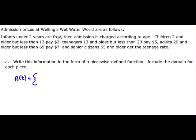But then the next one says children two and older. So this is up to but not including. So it's zero dollars for anything between zero and two but not including two. Children two and older but less than 13 pay $2. So then we've got a two and that's from two including up to 13.